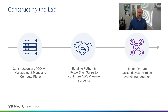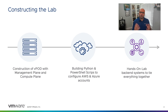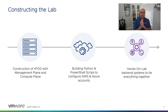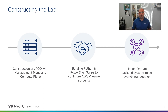We constructed the lab in three phases. The first was constructing the vPod itself — this is where we built our management plane and compute plane. The resources for this vPod live on premises in our data center. Once we configured everything and deployed all our components, we captured that vPod and deployed it multiple times so each individual lab gets its own vPod.